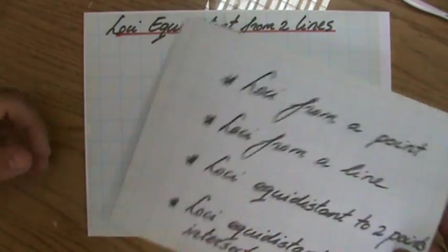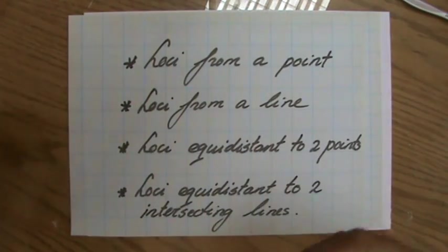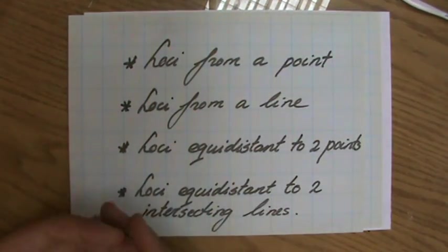We've done loci from a point, we've done loci from a line, loci equidistant to two points, and now the final one, equidistant to two intersecting lines.